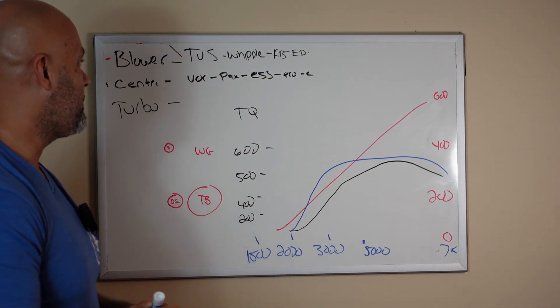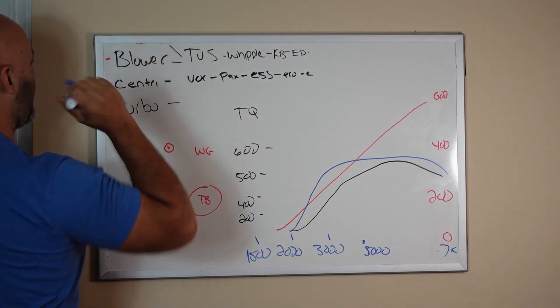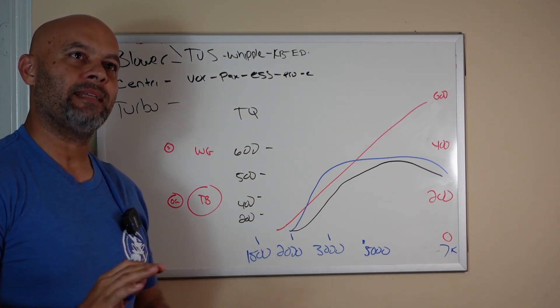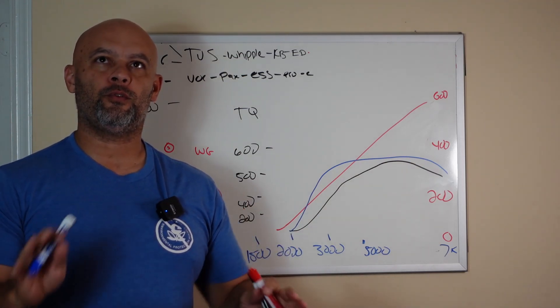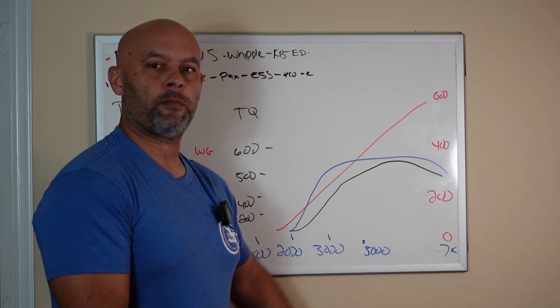But some people just for whatever reason they want the centrifugal to perform like a top mount supercharger. And I say, what do you want to do with the car? Do you want to daily drive the car? Yes. Do you live above 7000 RPMs constantly? No.